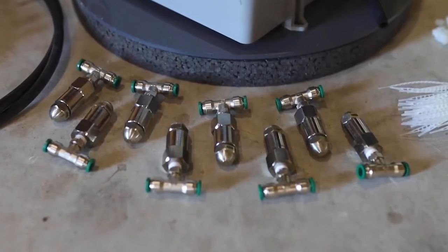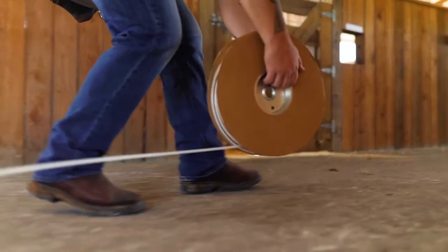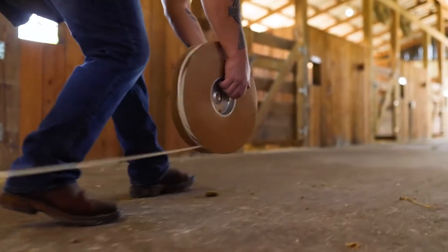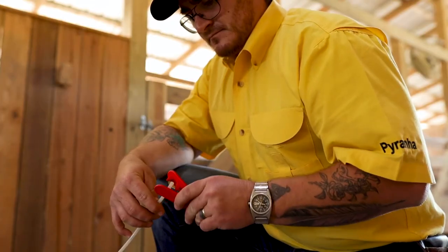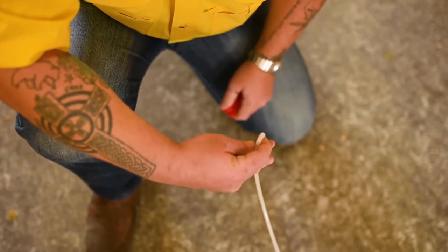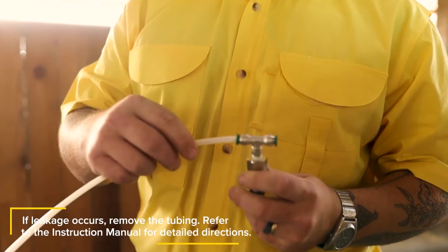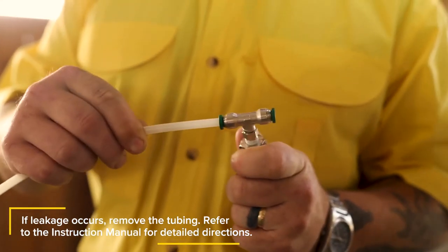Remove the spray nozzles from the package. Using the barn diagrams as a guide, run the quarter inch nylon tubing on the ground around the stall area to be treated beginning at the tank. Using a sharp knife, cut the tubing squarely to ensure airtight connections at each spray nozzle. Push the tubing firmly into the side of the spray nozzle tee. Pull gently to confirm that you have secure connections.